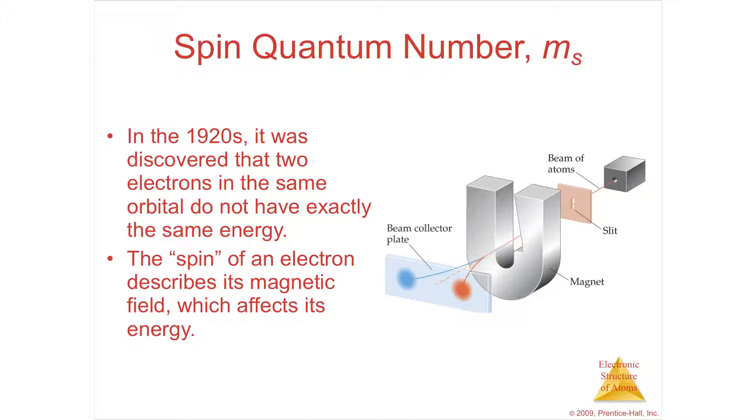They already understood that you had these quantum numbers, kind of an address, and that each electron lived in its own little house. Well, what happens is that an orbital isn't a little house for one electron to live in. An orbital is a room for two electrons to live in, and each one has a different spin. If you have a charged particle and you spin it, you're going to get a magnetic field.